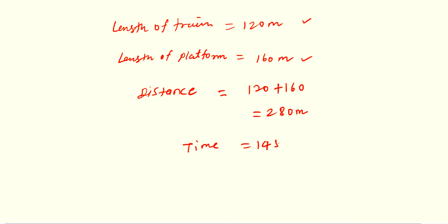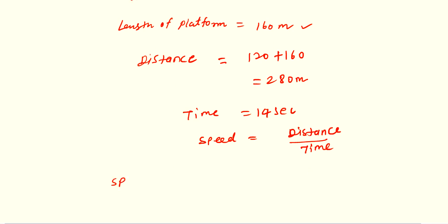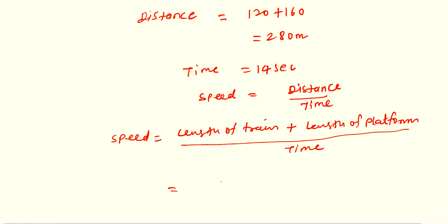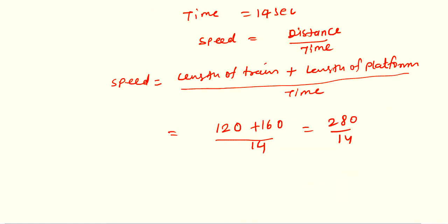Time is given as 14 seconds. Speed equals distance upon time. In this case, distance is length of train plus length of platform upon time: 120 plus 160 divided by 14, which is 280 divided by 14 equals 20 meter per second. So the speed of that train is 20 meter per second.